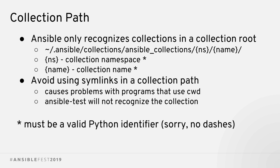Some of you may be thinking you can just use a symlink to put your collection in place — unfortunately that doesn't work well. Current working directory on POSIX systems only pays attention to the real path, so ansible-test won't recognize your collection if you try that trick. You're actually going to have to have it in a real path that's a collection root. And for those of you who like using dashes in your names — sorry, you have to use valid Python identifiers for both your namespace and collection name. Use an underscore instead.